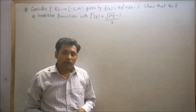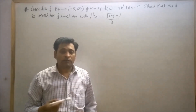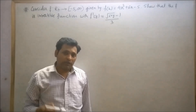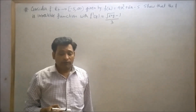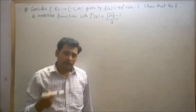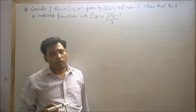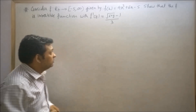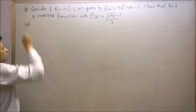First of all, I will try to prove that the function is one-one. Then I will prove this function is onto. When the function is one-one and onto, it will definitely be a bijective function. And a bijective function is always invertible.